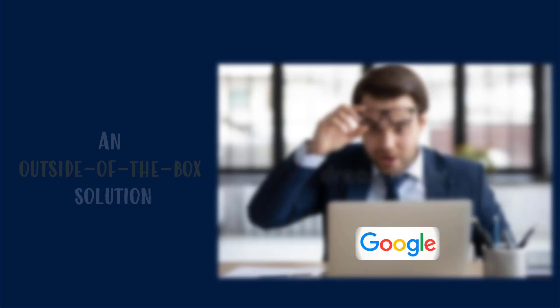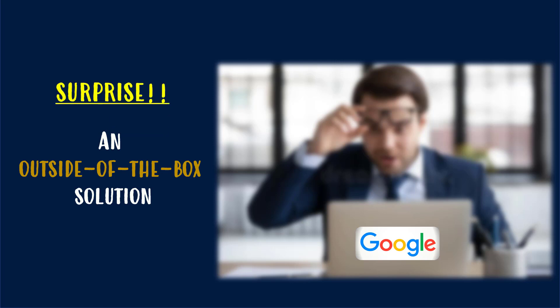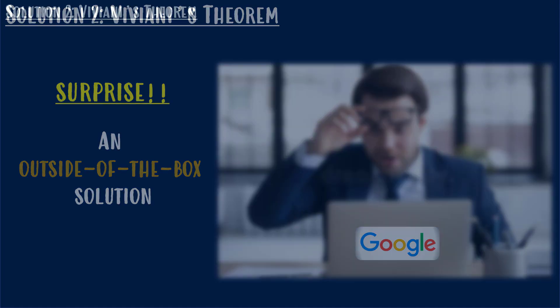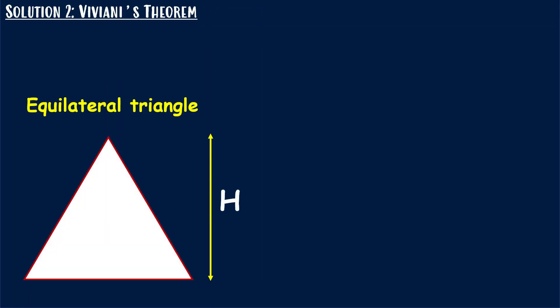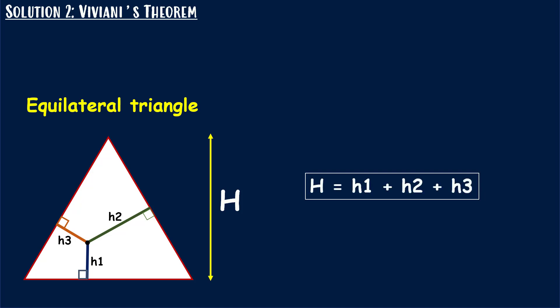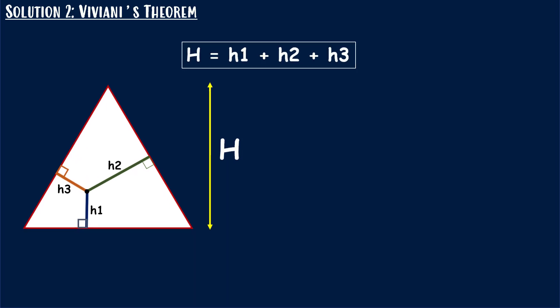Let me show you another outside-the-box approach that can even surprise the interviewer. For this solution we will be using Viviani's theorem. Say you have an equilateral triangle with an altitude H. Consider a point interior to this triangle and take three perpendiculars from this point to the three sides. The sum of these three perpendicular lengths will always equal the altitude H. This is called Viviani's theorem.